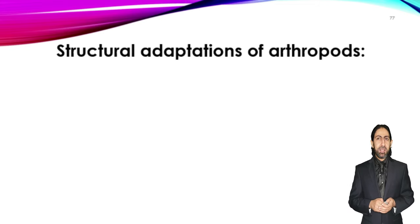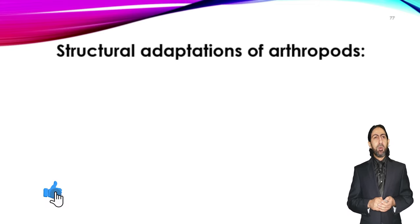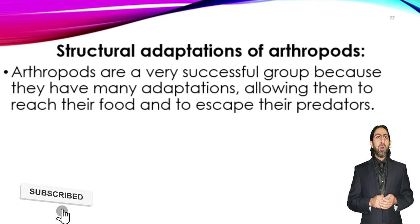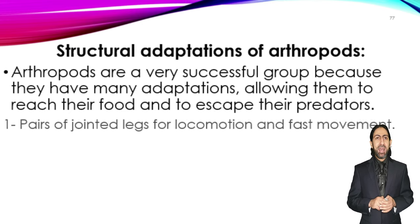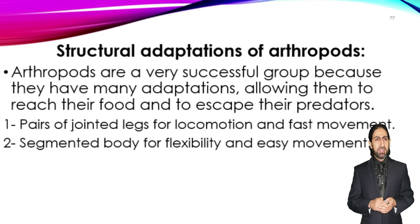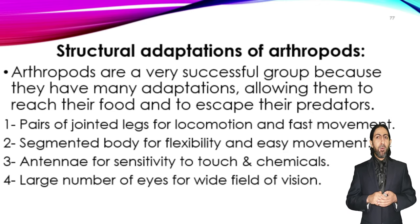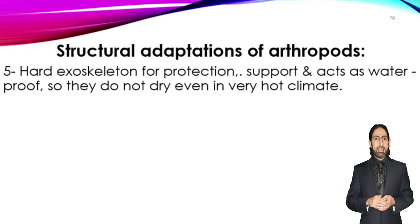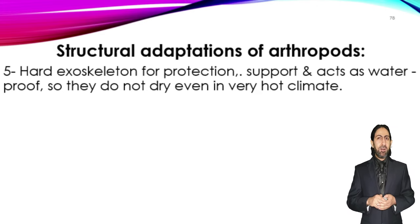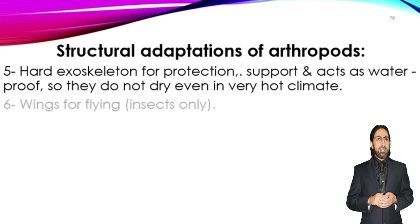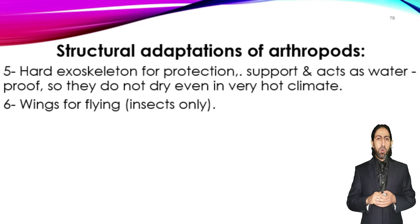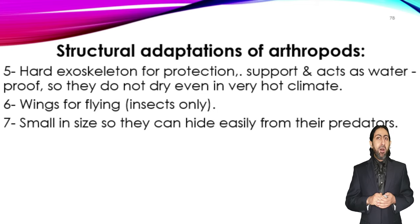Arthropods are a very successful group due to many adaptations. They have jointed legs for locomotion and fast movement, segmented bodies for flexibility, antennae for sensing touch and chemicals, and large numbers of eyes for a wide field of vision. Their hard exoskeleton provides protection, support, and is waterproof, allowing survival in hot or dry climates. Insects also have wings for flying, and their small size helps them hide from predators.